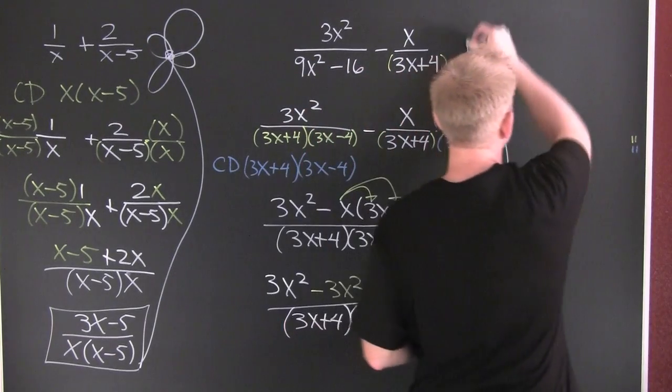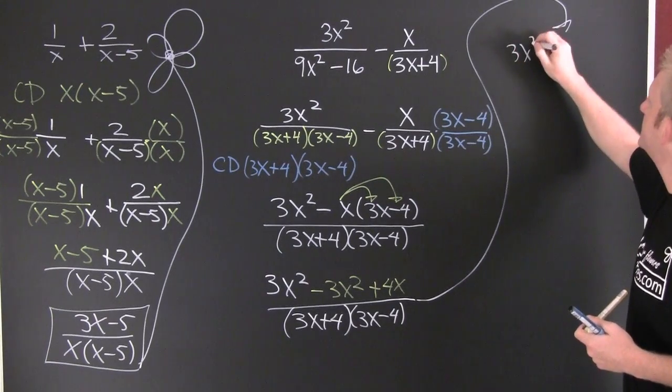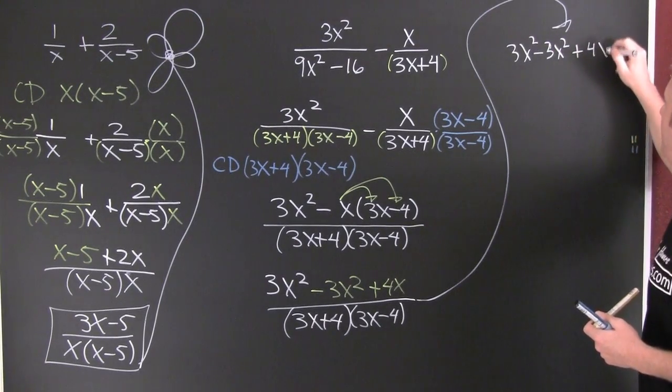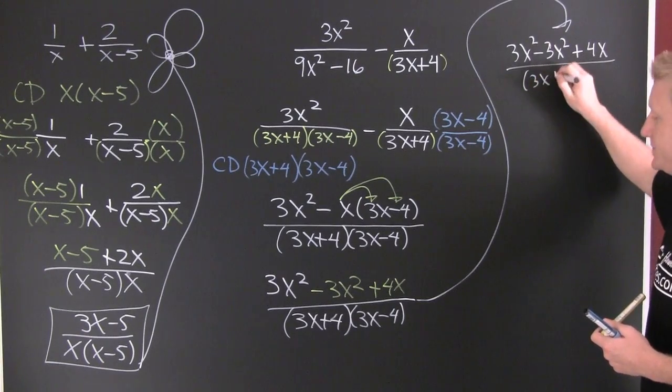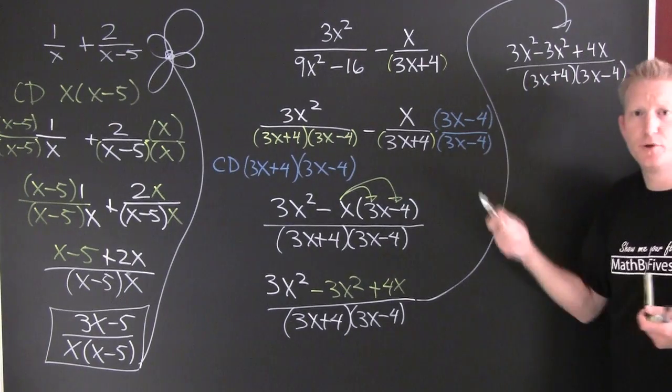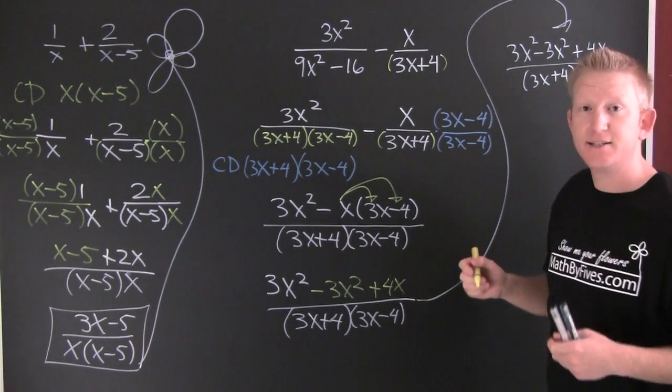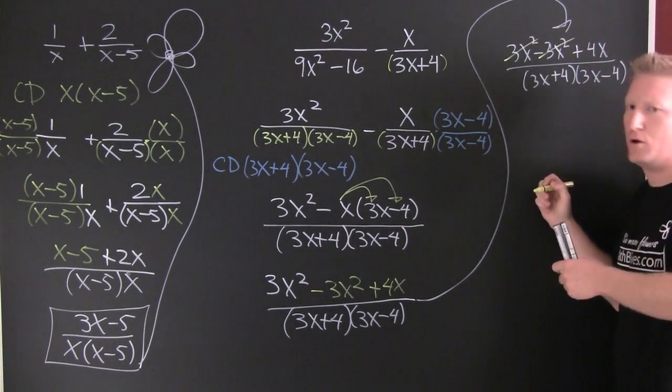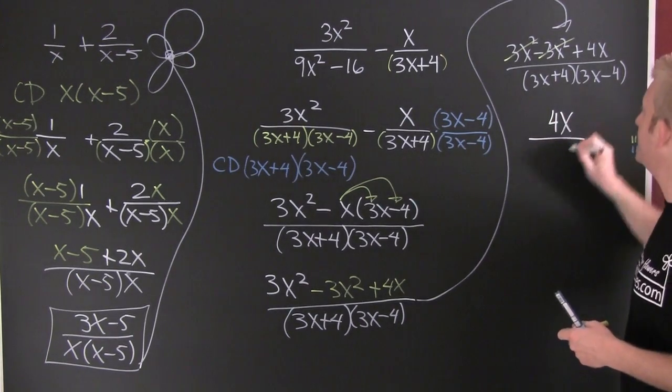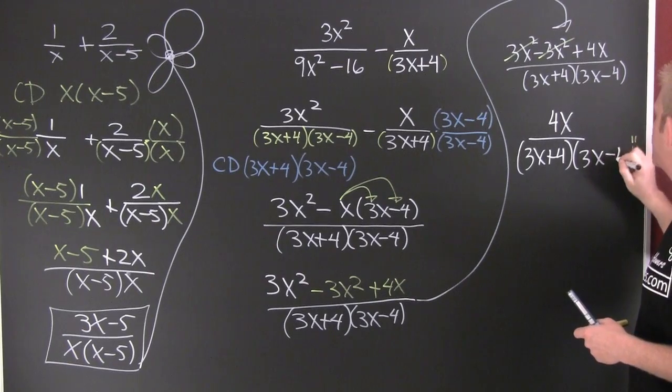I'm gonna take it to the top. I'll rewrite: 3x squared minus 3x squared plus 4x divided by 3x plus 4 times 3x minus 4. Let's simplify that numerator. Do you see any common factors or additive inverses? And after the dust settles you're gonna be left with 4x divided by 3x plus 4 times 3x minus 4.